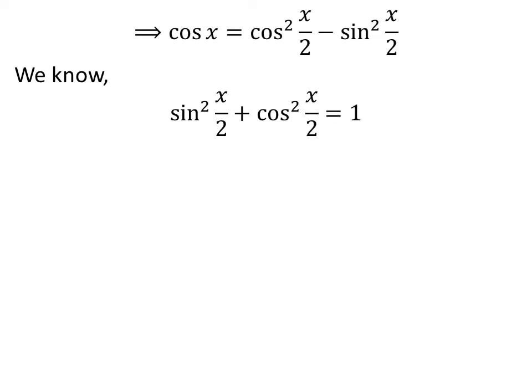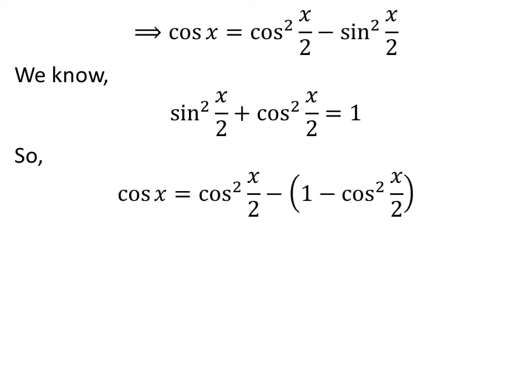We know the famous trigonometry identity: square of sine of half of x plus square of cosine of half of x is equal to 1, so square of sine of half of x is equal to 1 minus square of cosine of half of x. Substituting gives cosine of x equal to square of cosine of half of x minus the quantity 1 minus square of cosine of half of x.